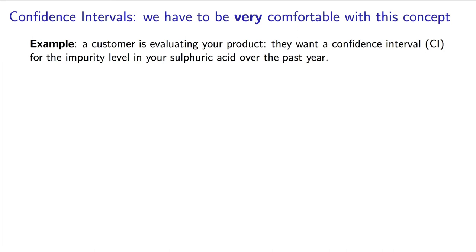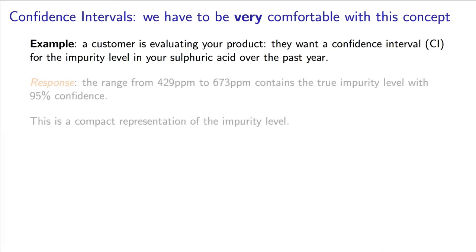Imagine we are providing a 95% confidence interval for the impurity level in our sulfuric acid product produced over the last year. We could provide this, for example, to a prospective customer as a statement of the quality of our product. If the interval has a lower bound of 429 parts per million and the upper bound is 673 parts per million, this is a compact representation of our processor's capability. It summarizes several things.